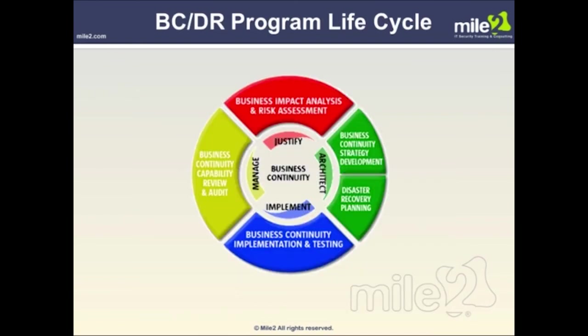The business continuity and disaster recovery program has a distinct lifecycle. General business continuity phases on the inside and interrelated BCP processes on the outside must work together. A BCP program must be justified through a business impact analysis and a risk assessment. The BCP architecture is manifest in strategy development and disaster recovery planning. Implementation must include training, drilling, and testing. As an integral part of BCP management, capabilities must be reviewed, audited, and when prudent, adjusted — as this is a cyclical management function requiring the program to consistently demonstrate how it is vital to addressing business operations risk.